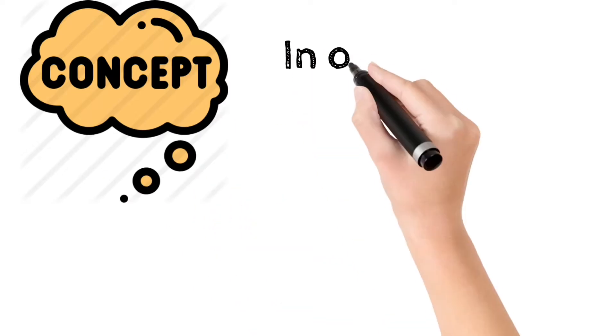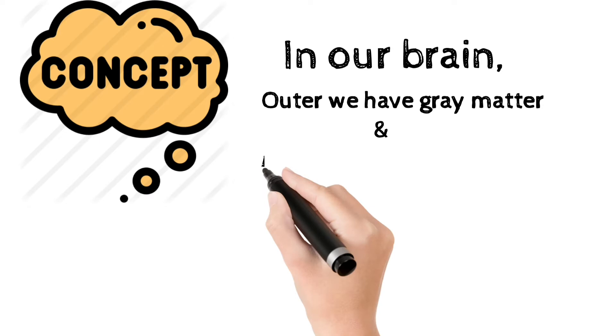In our brain, the outer side we have grey matter, and at the inner side we have white matter.